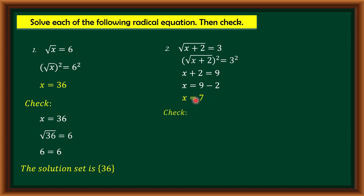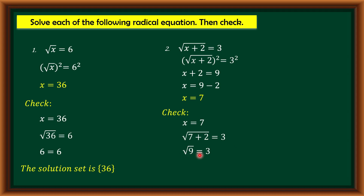Let us check using x = 7 in the original equation: square root of 7 plus 2 is equal to 3. Since 7 plus 2 is 9, we have square root of 9 is equal to 3, and square root of 9 is indeed 3. Therefore 3 equals 3, which is correct. The value x = 7 satisfies the equation, and the solution set is {7}.